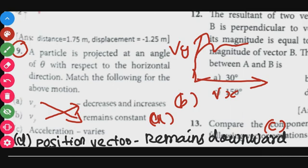And the next, position vector. Position vector direction will keep changing, so it varies.